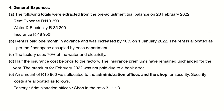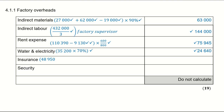Half the insurance cost belongs to the factory — that's a 50% allocation. But I need to adjust first: the insurance premiums remained unchanged for the year, and the premium for February 2022 was not paid due to a bank error. So the 48,950 only covers 11 months. I calculate one month's insurance as 48,950 ÷ 11, add it back to get the full year, then allocate 50% to the factory — giving 26,700.